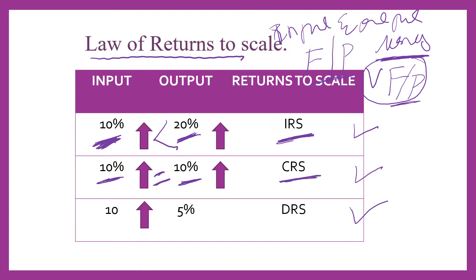In the last stage, the increase in input is 10 percent but increase in output is less than 10 percent — that is 5 percent. So increase in output is less than increase in input. This stage we call diminishing or decreasing returns to scale.